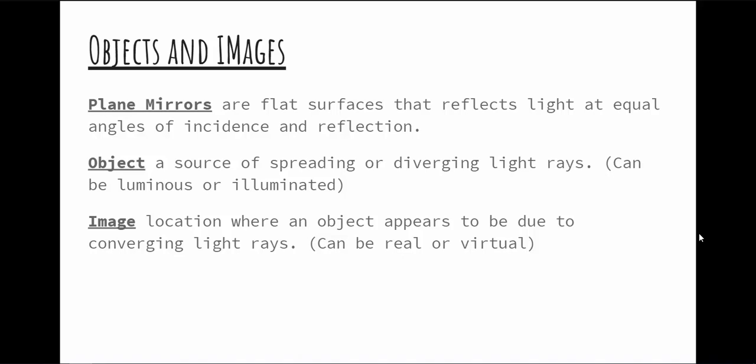So real images — you can interact with them almost like a real object. A virtual one you can see but you can't do anything with it. The projector here makes a real image, and that convex mirror makes a virtual image. Mirrors and lenses are really doing basically the same thing, except mirrors reflect where lenses pass through — but they give us the same properties.